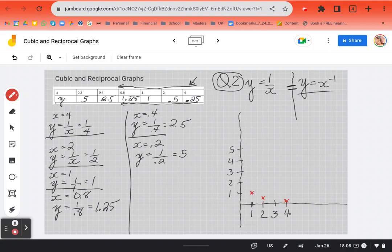When x is 0.8, y is 1.25. And when x is 0.4, so a little less than half, y is 2.5. My apologies for the confusion. And when x is 0.2, y is 5.